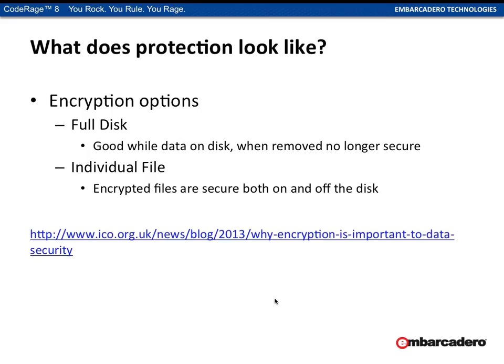There are two types of encryption. Full disk encryption encrypts disks completely and is fine while data is on the disk, but when data is removed from the disk it's no longer secure — copying a file onto a USB flash drive is a security hole. Individual file encryption is a much better approach. If the data is physically encrypted in the file, it doesn't matter whether it's on an encrypted disk, a non-encrypted disk, a USB drive, or a phone — wherever the file is, the data is encrypted.